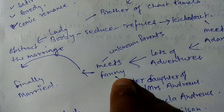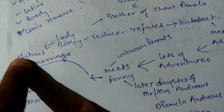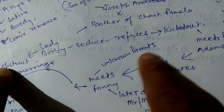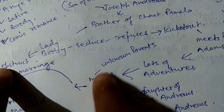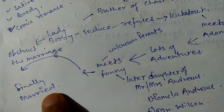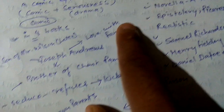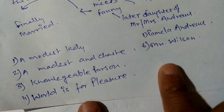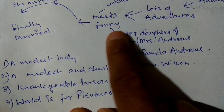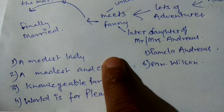When he meets Fanny and they think of getting married, Lady Booby obstructs them. She talked about Fanny's unknown parents, telling people she is the daughter of unknown parents and therefore Joseph Andrews must not marry her. But finally they got married because Fanny's parents became known, and Joseph Andrews' parents became known too.